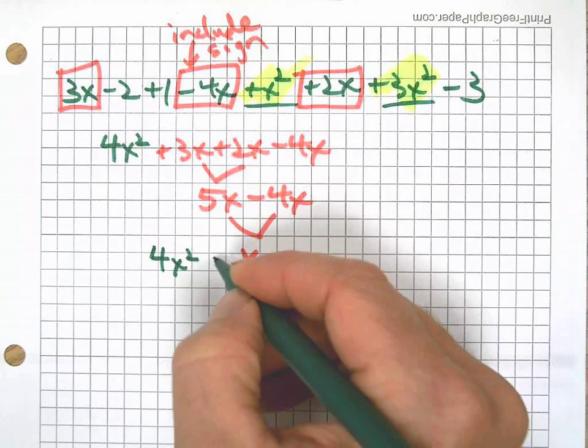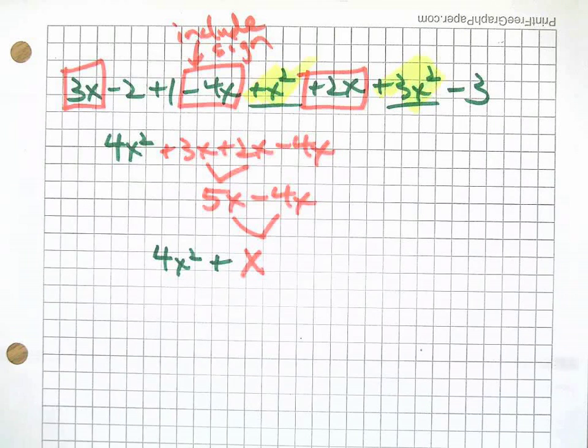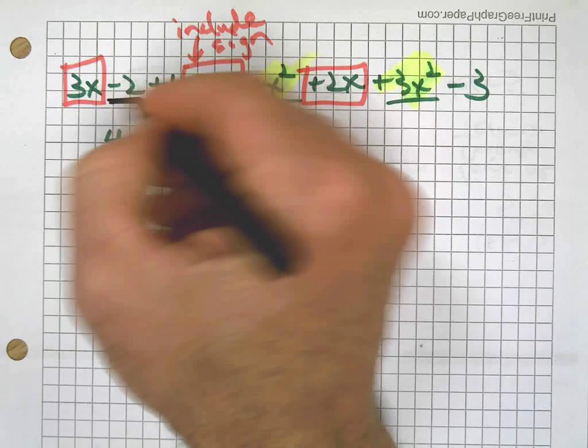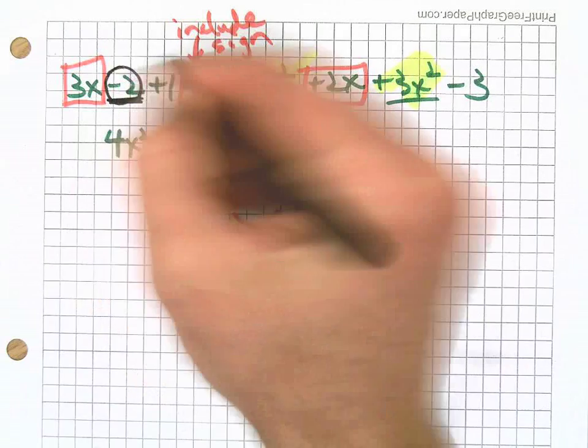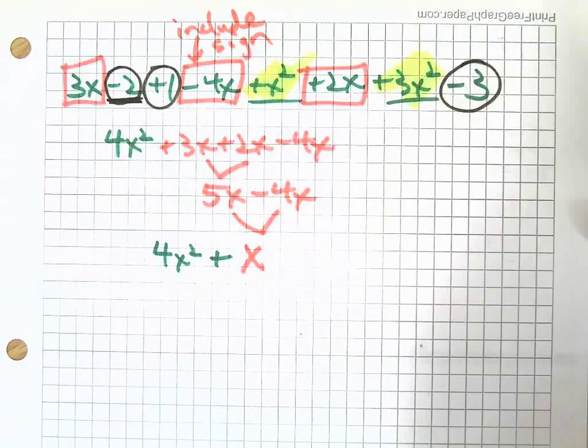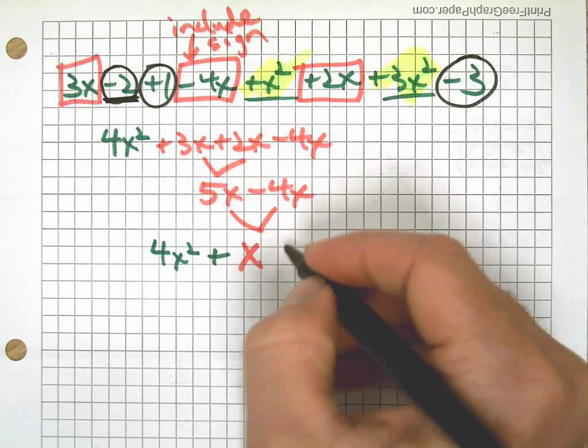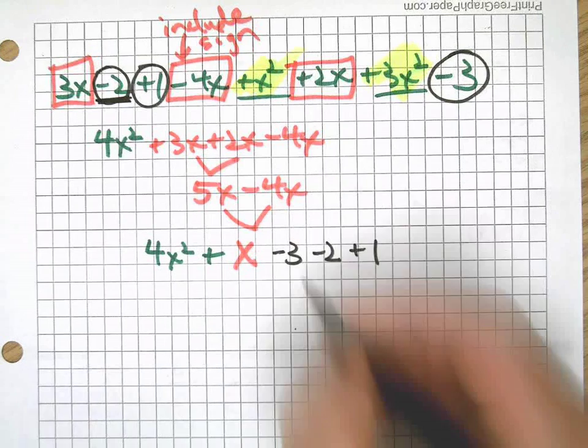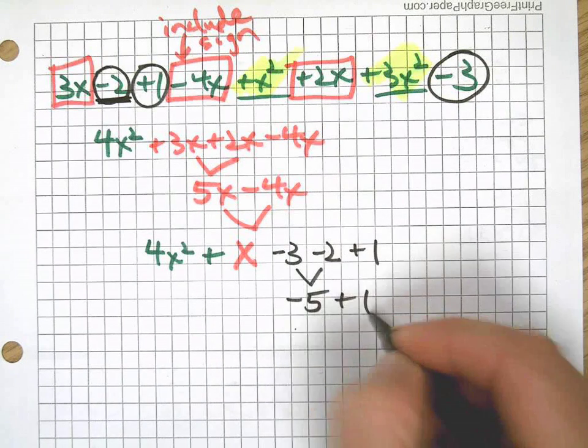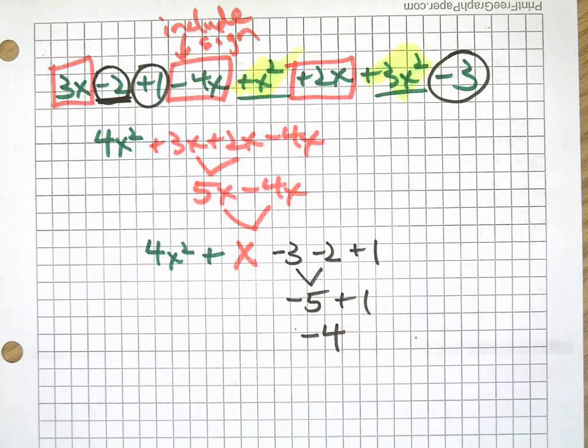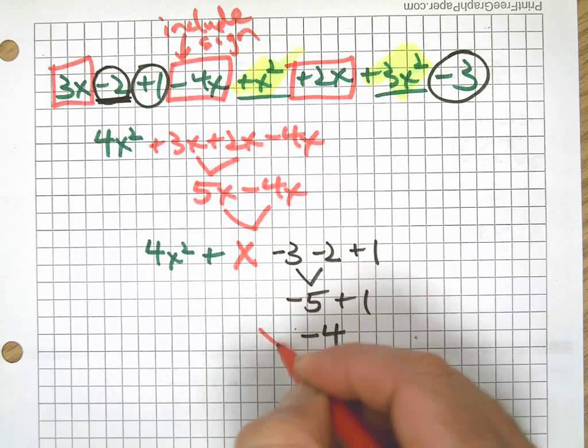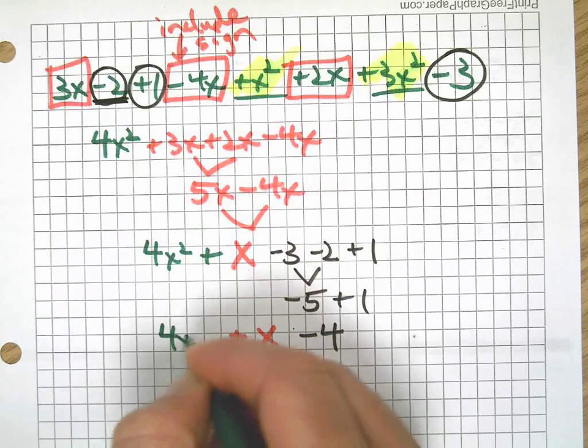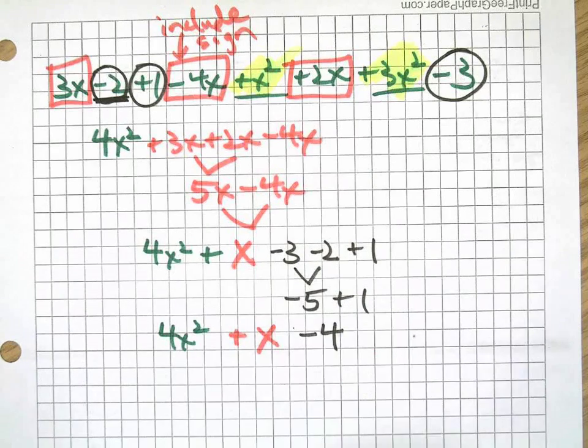You can do all that in your head. I just wanted to make sure you understand the process that's going on here. And finally, how about if I underline or I'll circle. Let's circle all the numbers. I've got negative 3, negative 2, and positive 1. I put those together. I have negative 5 plus 1, which makes negative 4. So our final simplified expression looks like this.